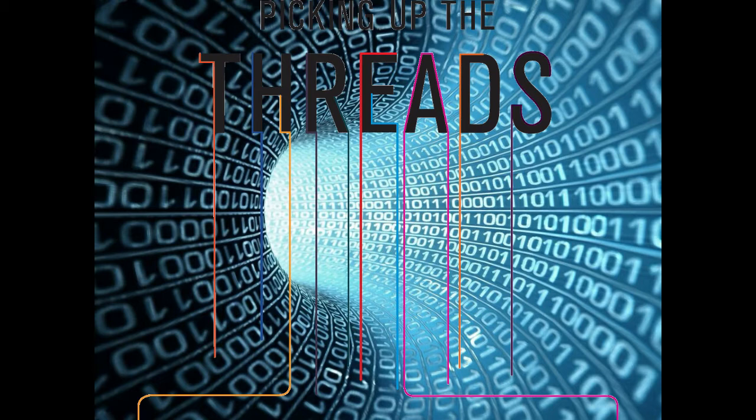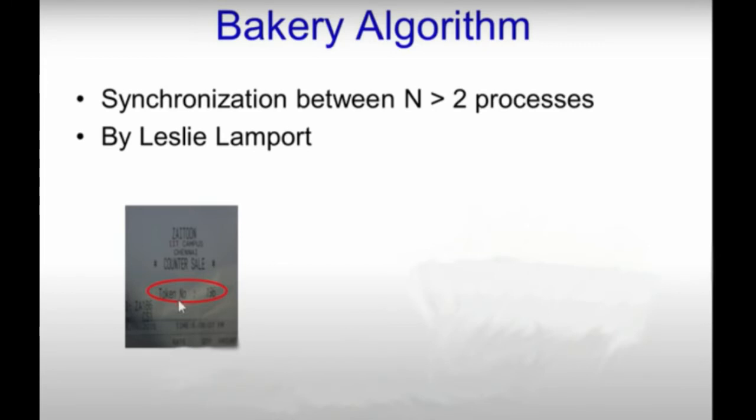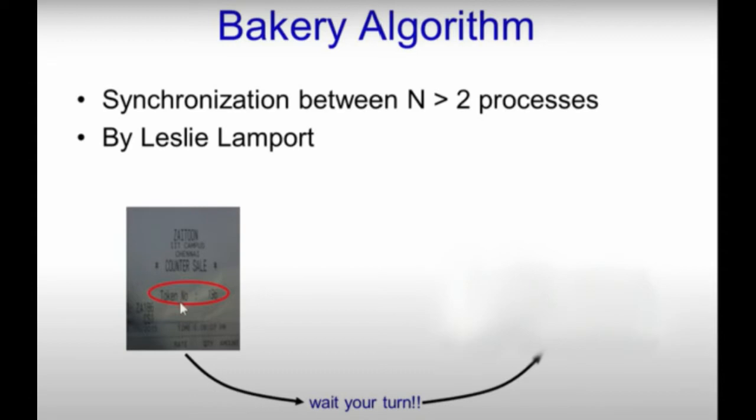The critical section will be shown in the pseudocode that Evan will be showing later. Essentially, when we enter the bakery, we are given a particular ticket with a specified number.